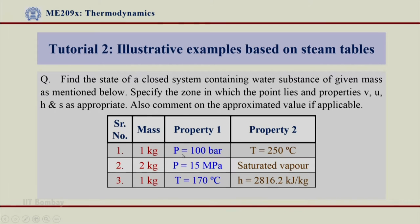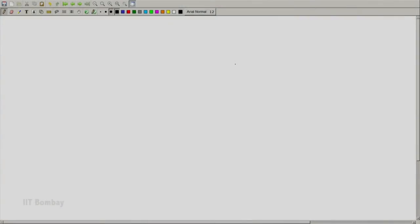Let us now look at the first problem where the mass is 1 kg, property P pressure is 100 bar that means 10 MPa, and property 2 is T equals 250 degree centigrade. Let us first try to see in which zone it lies. Question number 1: m equals 1 kg, P equals 100 bar, and T equals 250 degree centigrade.